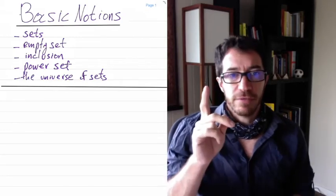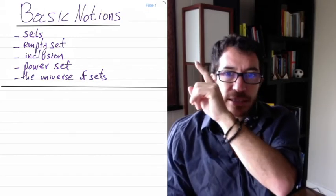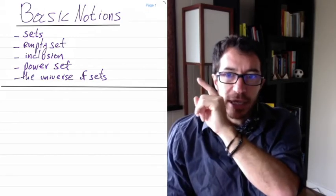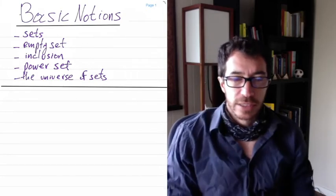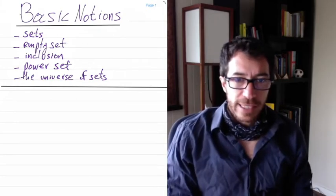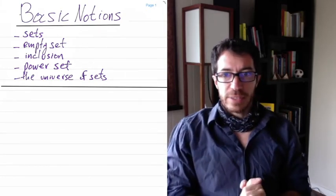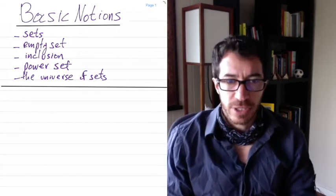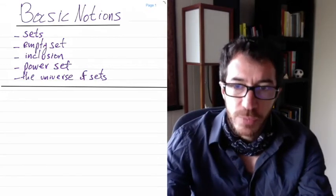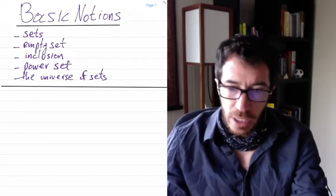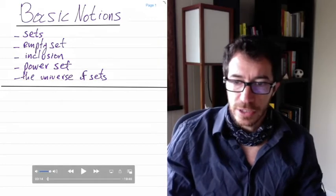We're going to look at five things: sets, empty set, inclusion, power set. At the end we'll talk a little bit about the universe of sets, which I guess is going to be new for most of you. Alright, so let's get into this.